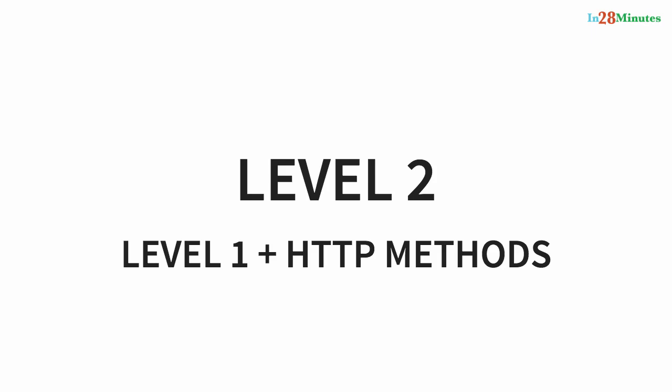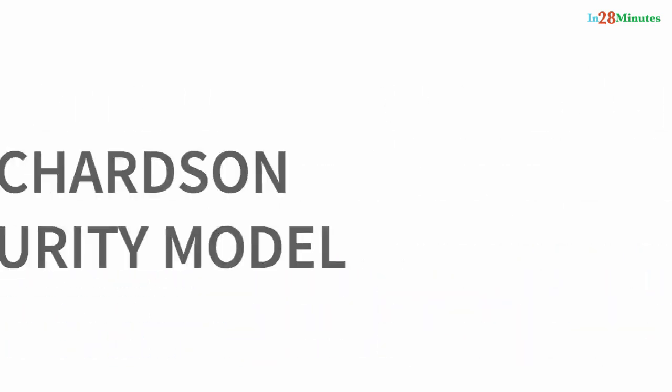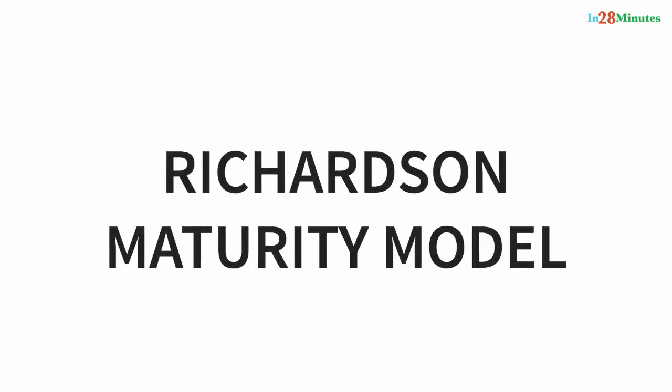Level three is level two plus HATEOAS. You're not just returning the data for a resource — you're also thinking about what the next possible actions on this resource are and what the consumer might want to do with it. For example, if you return the details of a Facebook post, you might also return actions related to how to comment, how to like, how to unlike, and so on. That's HATEOAS, and that's level three. These are the four different levels of Richardson Maturity Model.